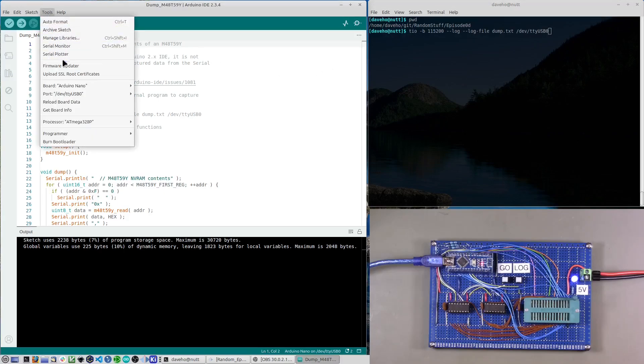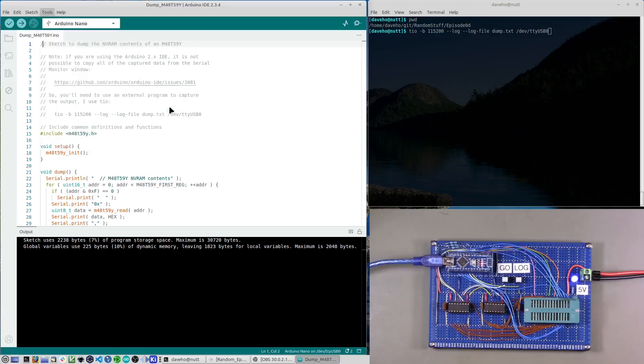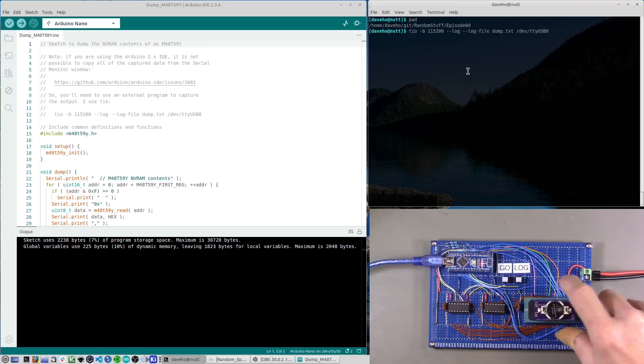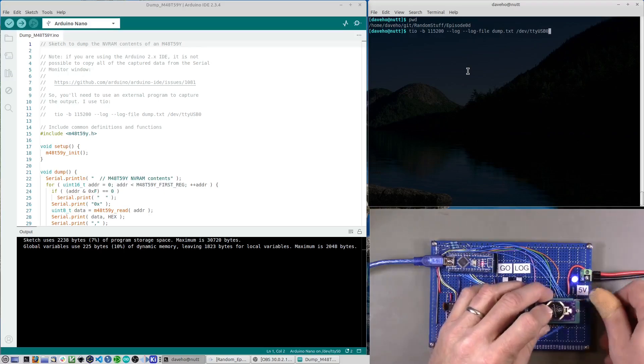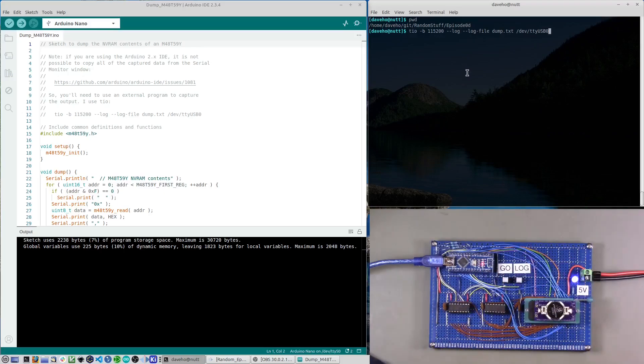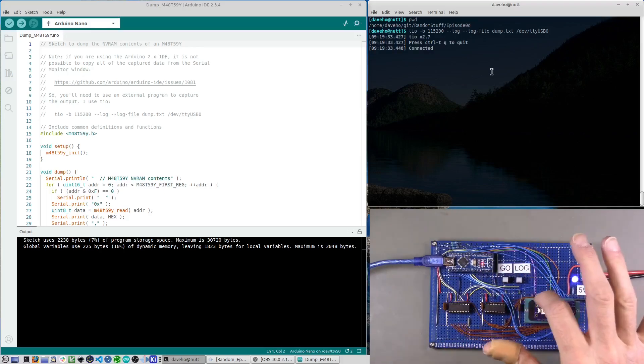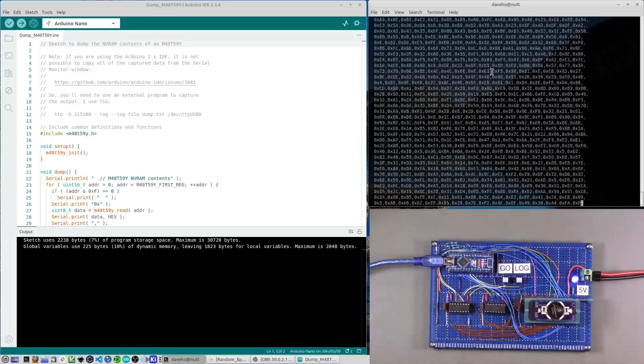The workaround is to use an external program to dump the data to a file. So I use the TIO program. I am going to tell the Arduino IDE that we're using a different serial port since if the Arduino IDE still has the Arduino serial port open, then I won't be able to use it. I'll put the device I want to back up in the ZIF socket, and I'll run my serial program here.